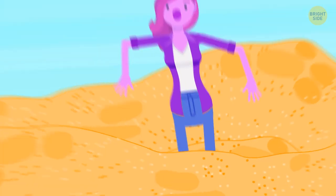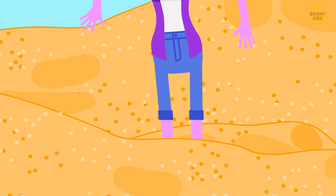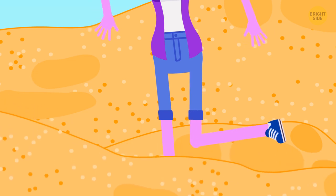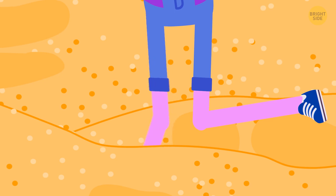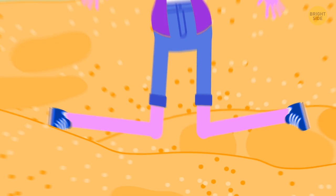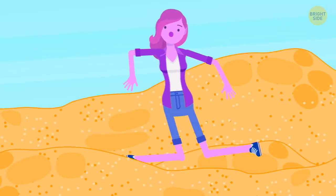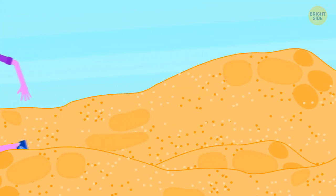To escape quicksand, shift your weight to your right leg and shake your left foot to get it up to the surface. Get your left knee on top of the sand and shake your right foot to get it out into a kneeling position as well. When you're on solid ground again, carefully roll as far away from the quicksand as you can.